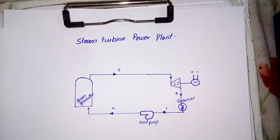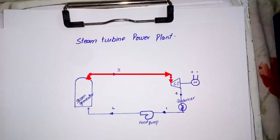Now let's check the functions of each component. After point 1, the component is the feed pump. The feed pump sends the water to the steam generator where it is converted into dry steam.